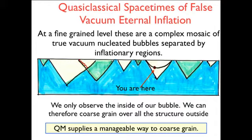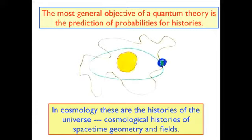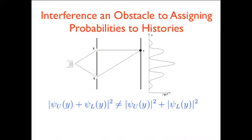To do that, I have to give you a three-slide introduction to decoherent quantum mechanics. The most general objective in any quantum theory, as I think I've already alluded to, is the prediction of probabilities for histories, in this case histories of the whole universe or for the earth going around the sun. And so these are histories of spacetime geometry and fields. But there's an obstacle for quantum mechanics to predict histories, which you can see very clearly in the two-slit experiment.